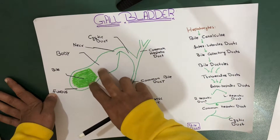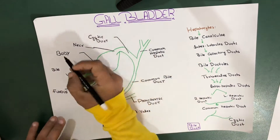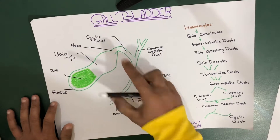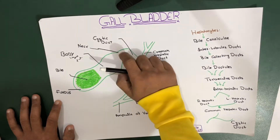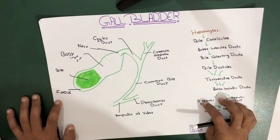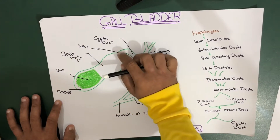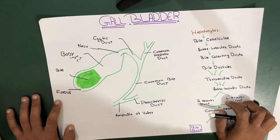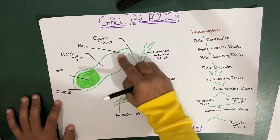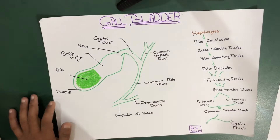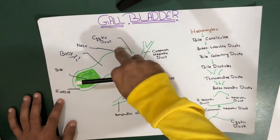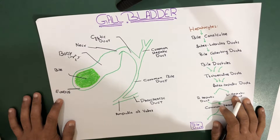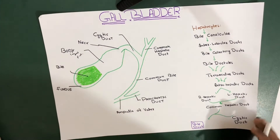The body is the largest part of your gallbladder. Regarding the neck, it contains mucosal folds named Hartmann's pouch. This is actually a common location for gallstones - if your teacher asks which is the common location for gallstones, remember it's the neck. Gallstones can lodge here causing cholestasis, which we'll discuss later.